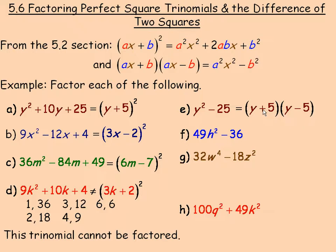For f, 49h², 49 is a perfect square. So we could think of this as (7h)² minus 36 is a perfect square. It is 6². So this should factor into (7h + 6) and (7h - 6). Again, the square root of 49h² would be 7h. So both binomials start with a 7h. And the square root of 36 is 6. So plus 6 here, minus 6 here.